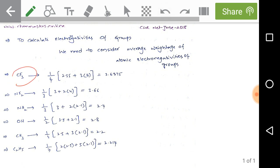Now come to the problem. In CF3 we have four atoms, so 1/4 into [carbon electronegativity is 2.55 and fluorine electronegativity is 4, and there are 3 fluorines]. So 1/4(2.55 + 3×4) = 3.6375. This is the electronegativity value of CF3.